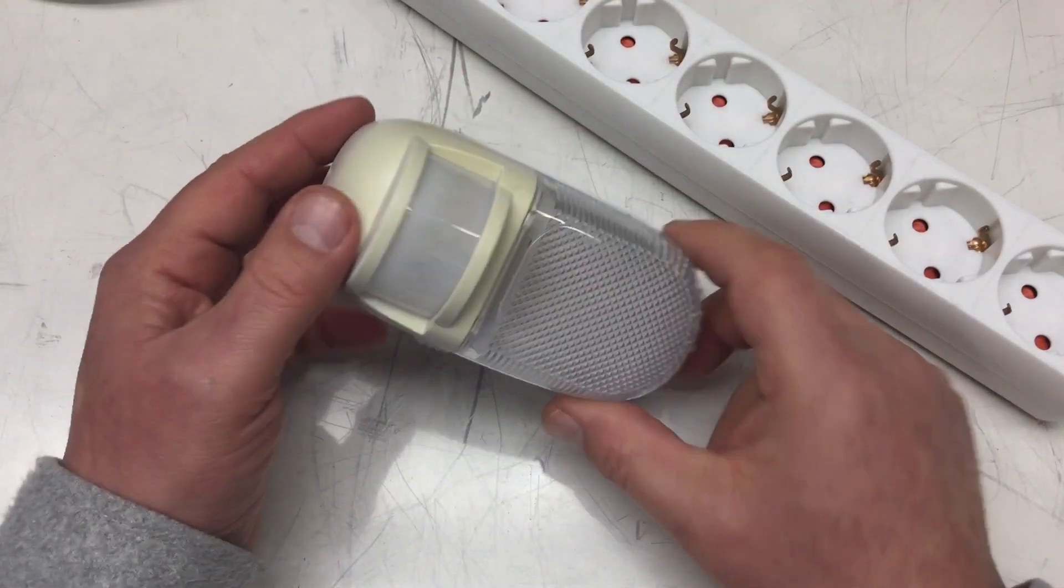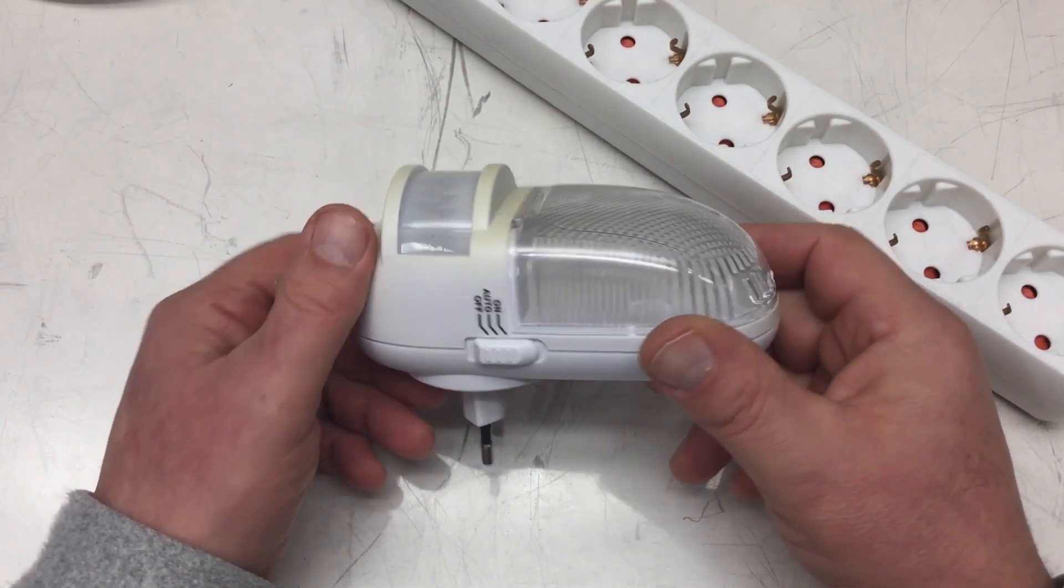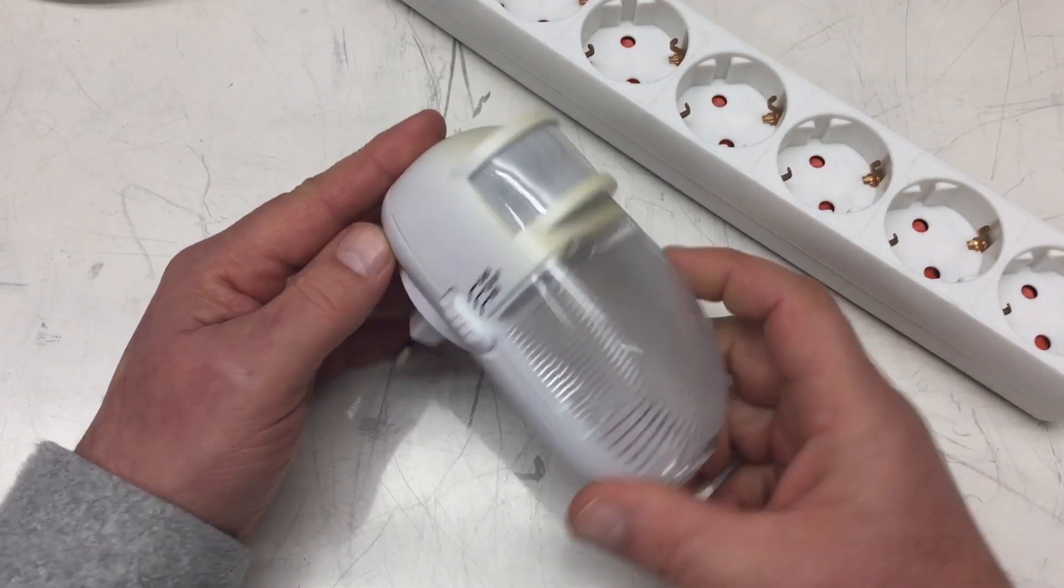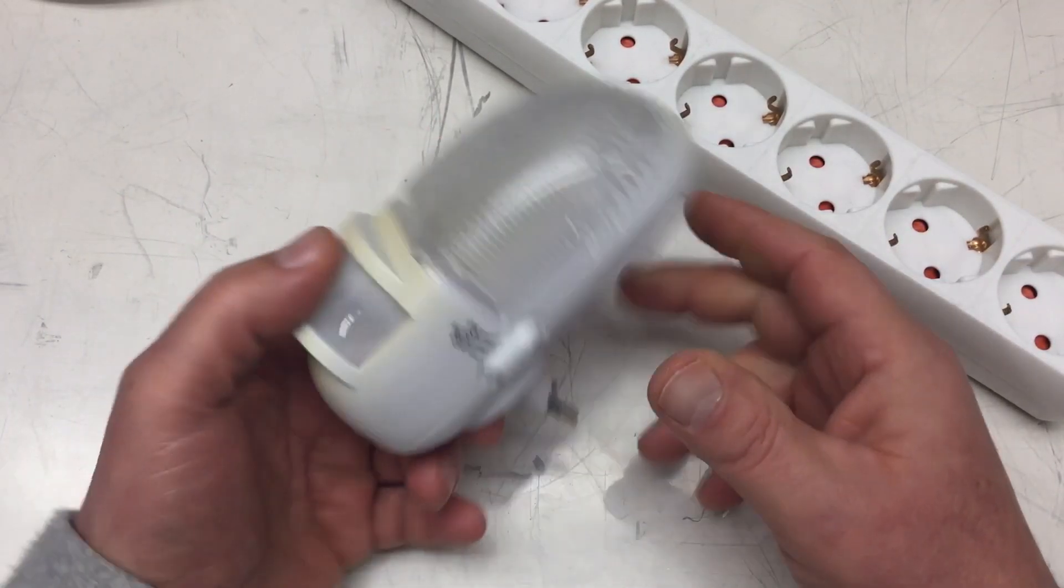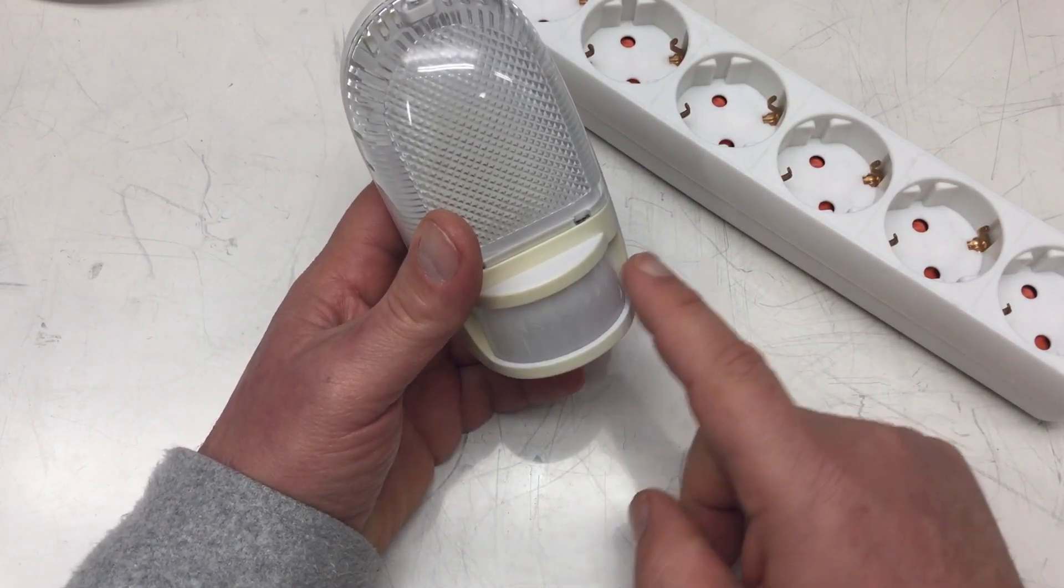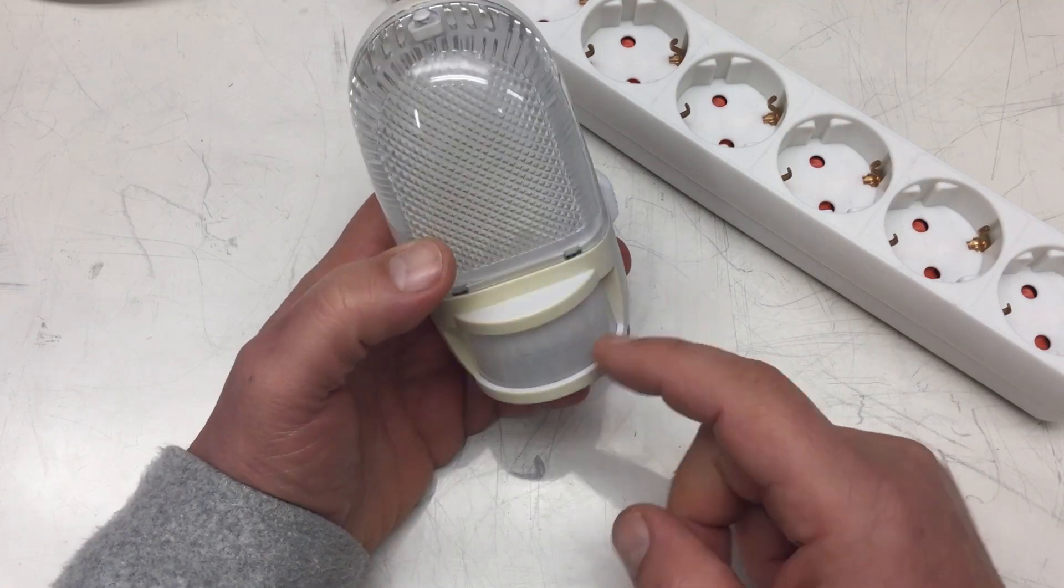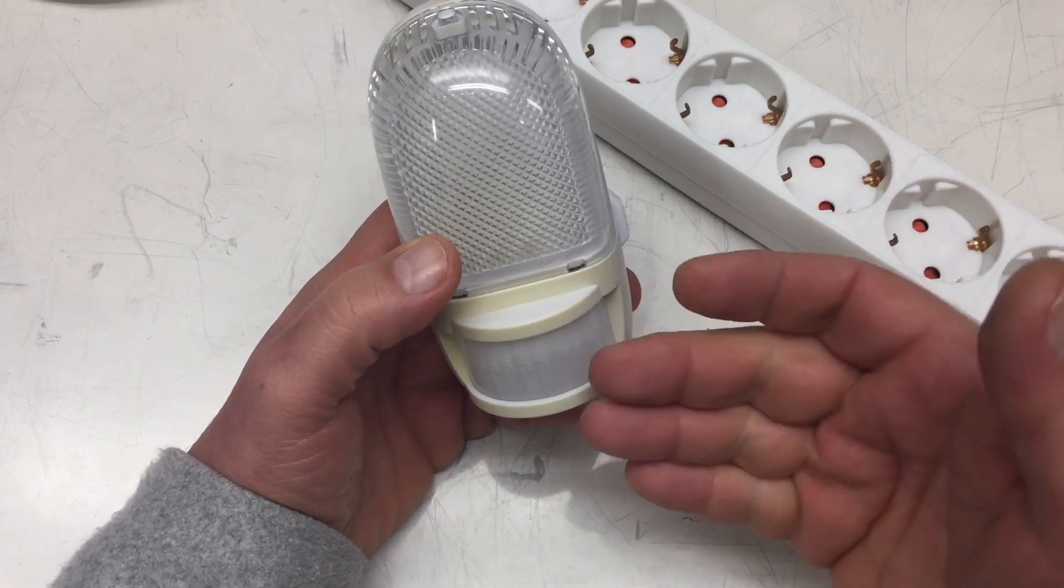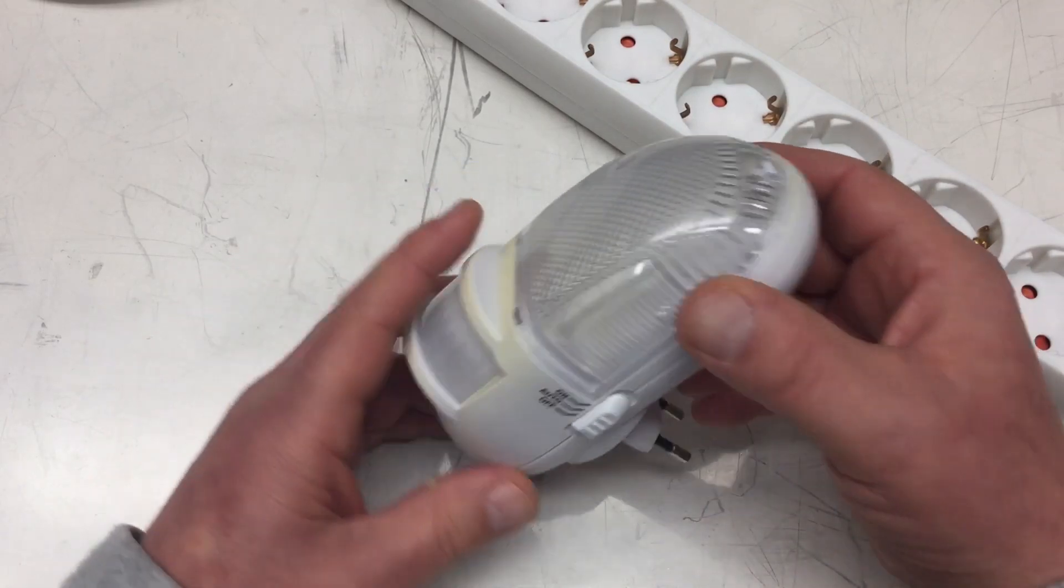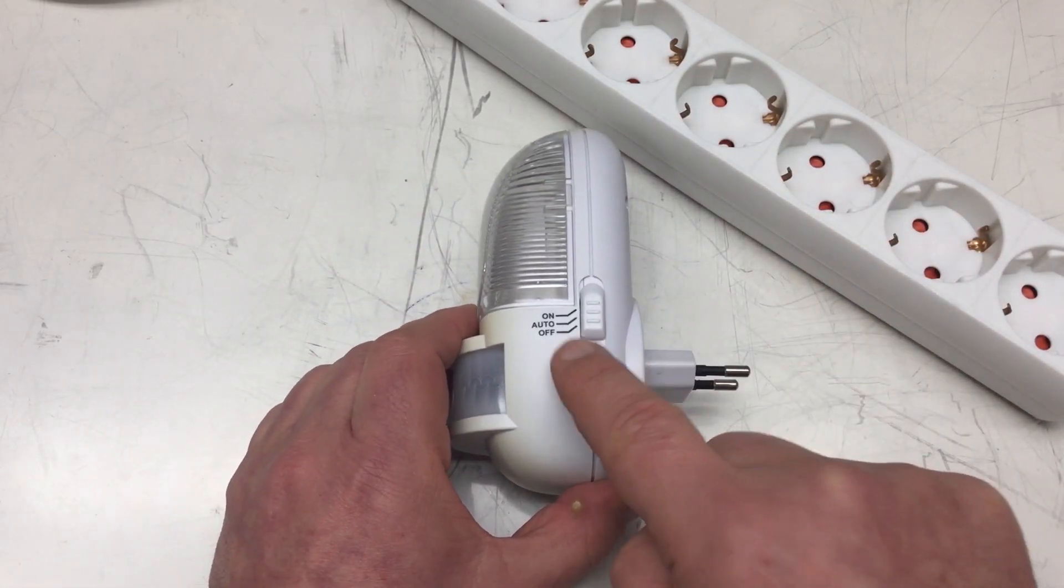Welcome back to a nice relaxing teardown of this little nightlight here. It's a usual nightlight with a PIR motion sensor. I probably guess it also contains some kind of light sensor because it has three settings.